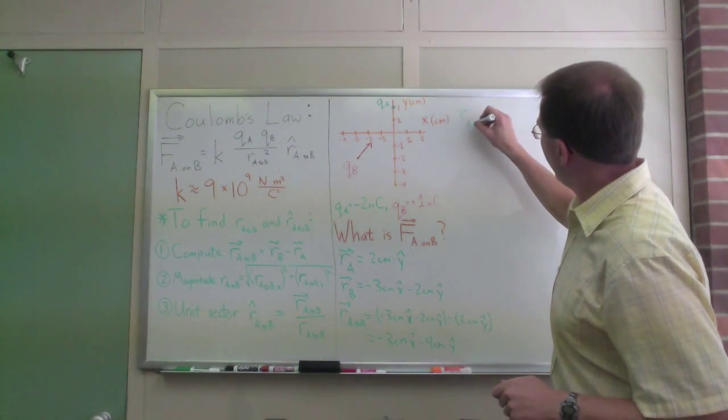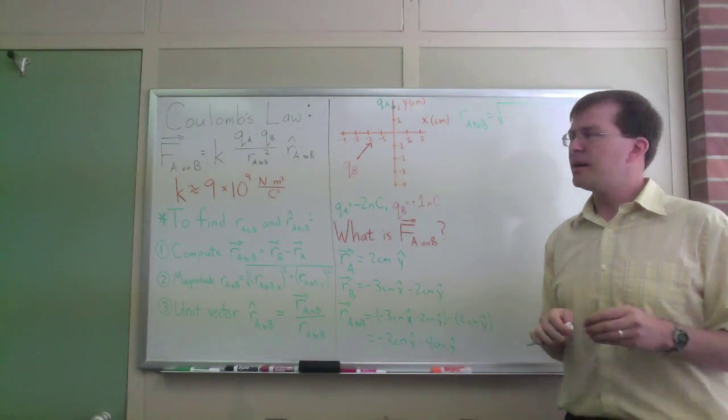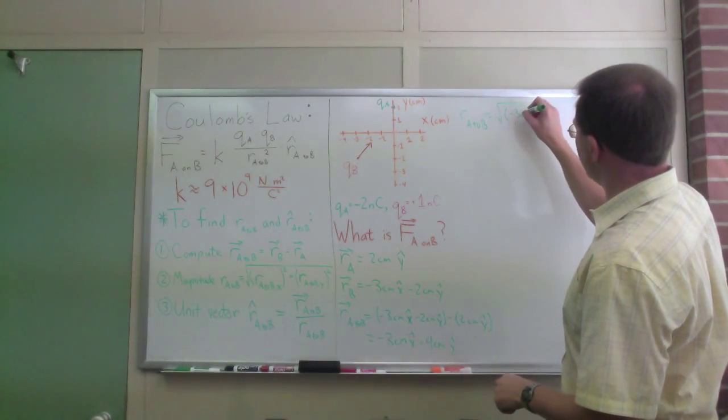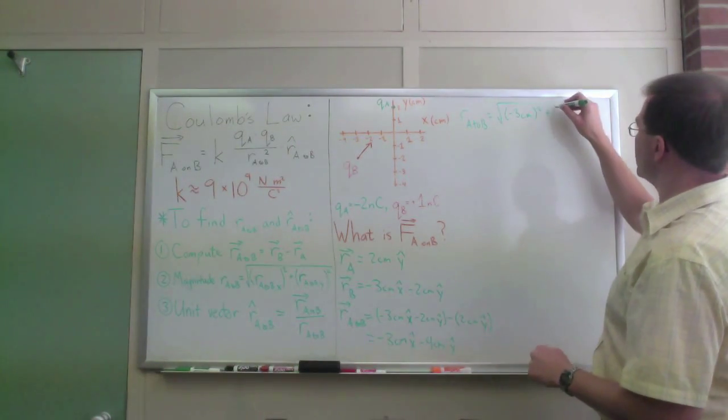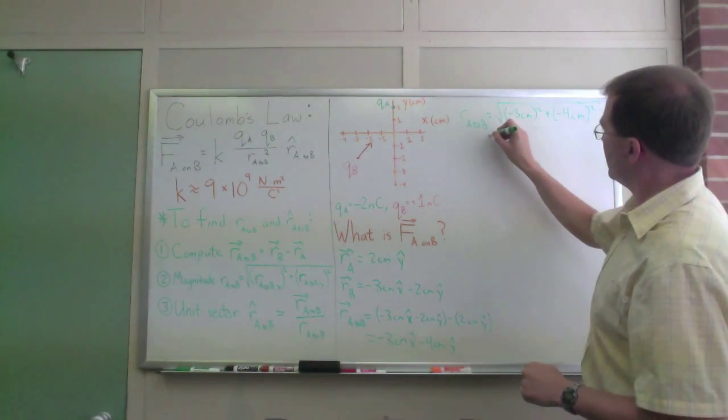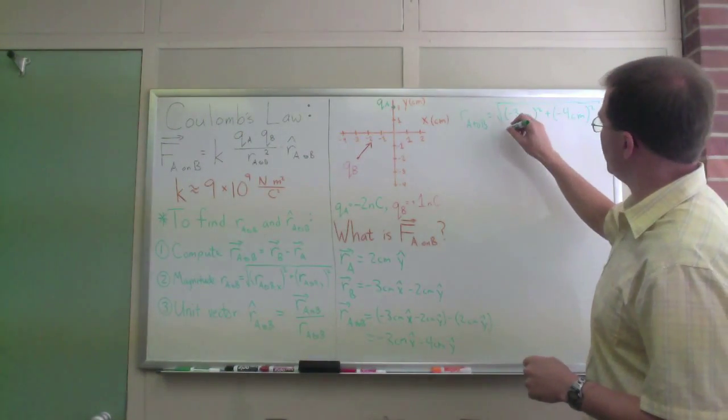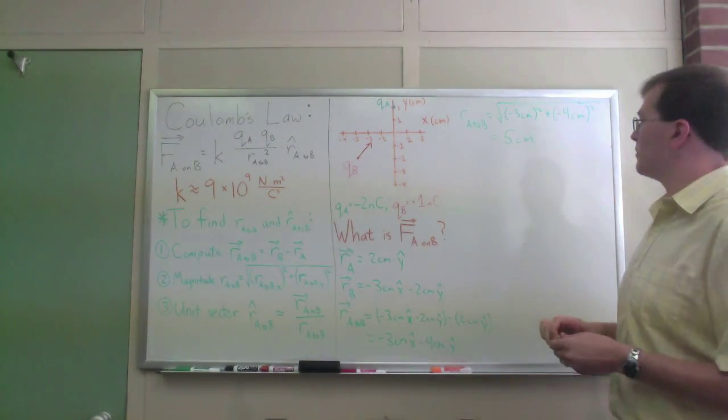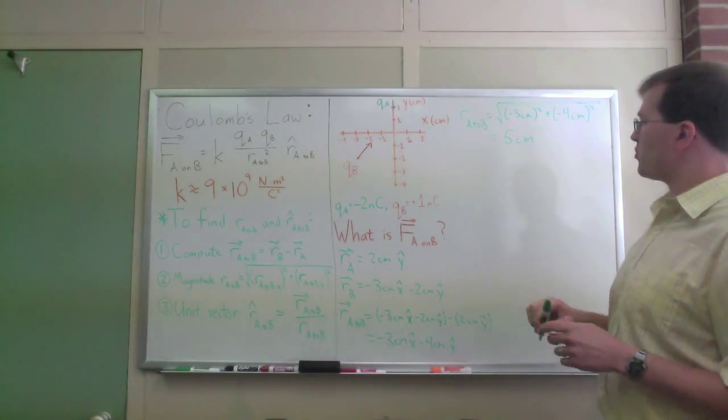R A to B is the square root of, this is just the Pythagorean theorem, it's the square root of the x component is negative 3 centimeters squared, plus y component is minus 4 centimeters squared. That's one that I can do in my head. 3 squared plus 4 squared is 5 squared. So this is going to be 5 centimeters. That's my r vector, my r scale rather, my magnitude of r, the magnitude of my r vector. So great, we've got that.